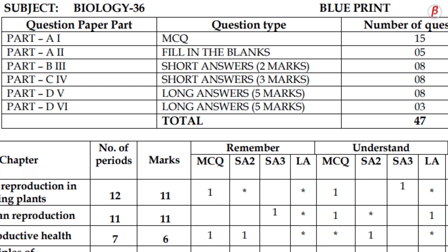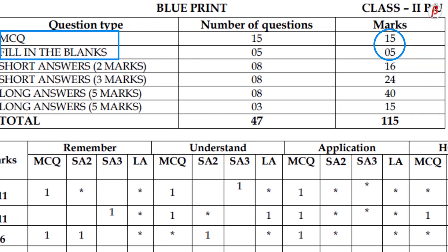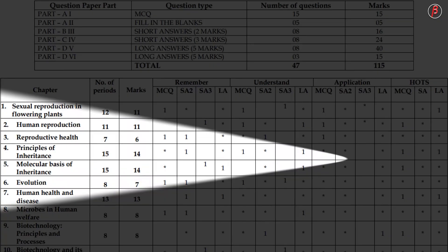The question paper pattern will be the same as your annual exam paper. Your question paper has four parts: Part A, B, C, and D. Part D has two sections where each question carries five marks. One of the best advantages of the new pattern is multiple choice questions and fill in the blanks — you can score up to 20 marks without struggling.